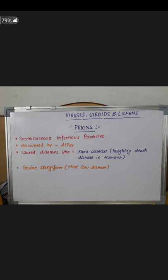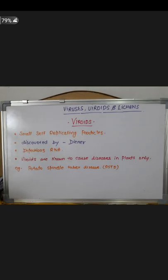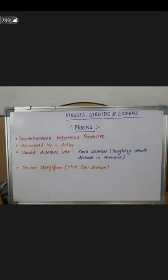Next are prions — Proteinaceous Infectious Particles. You should be aware that prions were discovered by Alper. Prions cause diseases in humans such as Bovine Spongiform Encephalopathy — also known as Laughing disease. It is important to know who discovered prions and who discovered viroids.